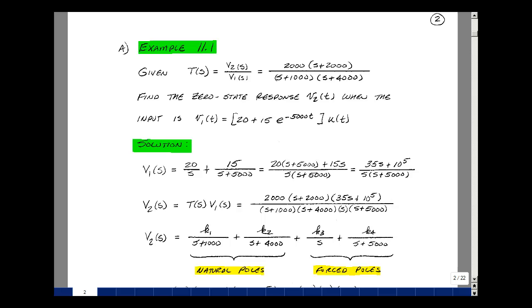Let's do an example. Suppose that T(s) is equal to 2,000 times (s plus 2,000) divided by (s plus 1,000) and then divided by also (s plus 4,000). Now let's find the zero state response v2(t) when our input is equal to 20 plus 15 e to the minus 5,000 t, u(t).